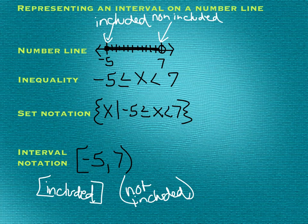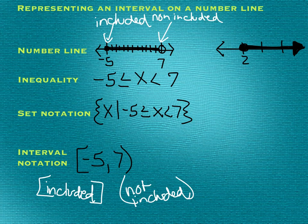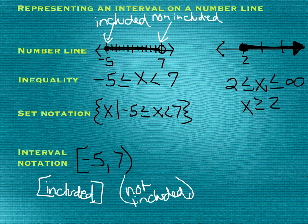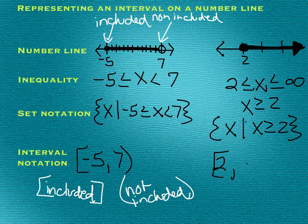All right, let's do another one of these. We'll put a number line. Here we go — we've got a closed circle on a 2, shaded to the right, and then the arrow is shaded as well. So that, in inequality form, would be 2 is less than or equal to x, or x is greater than or equal to 2. In set notation: x given that x is greater than or equal to 2. In interval notation, our lower bound is the 2 — it does include the 2 — and our upper bound is infinity. We don't ever include infinity because it's not actually a value, so we put a soft bracket on that.